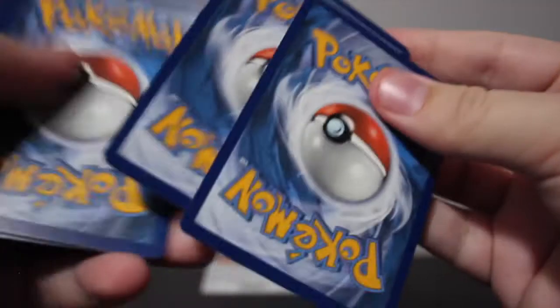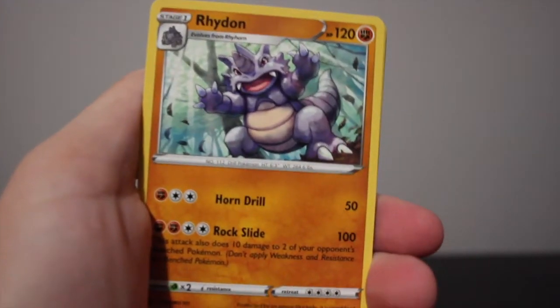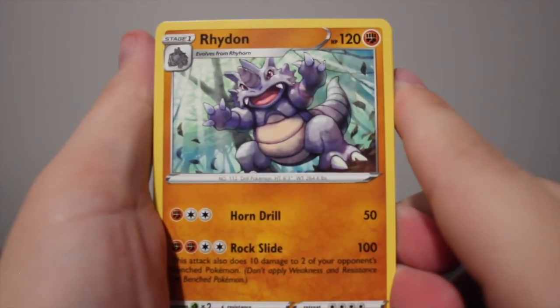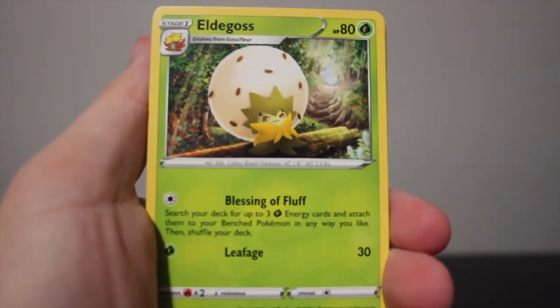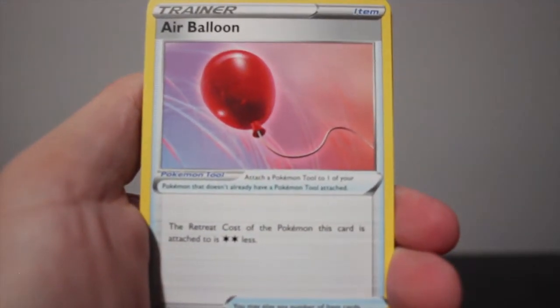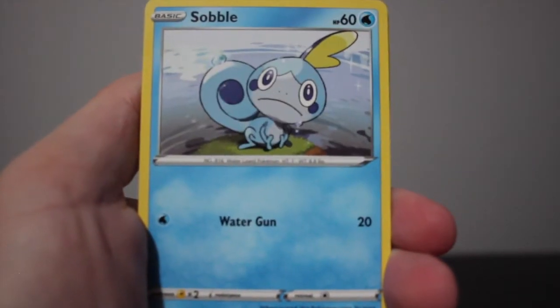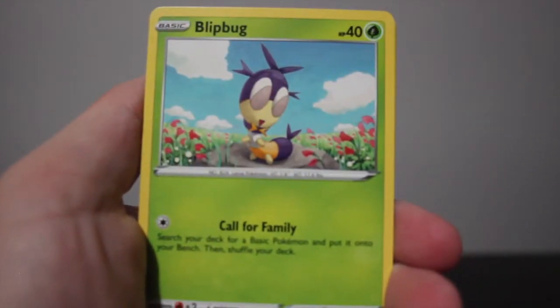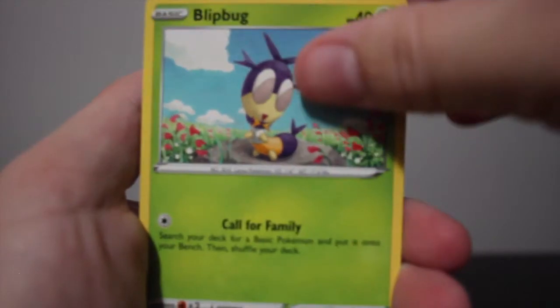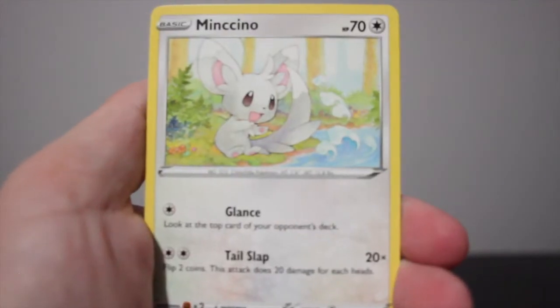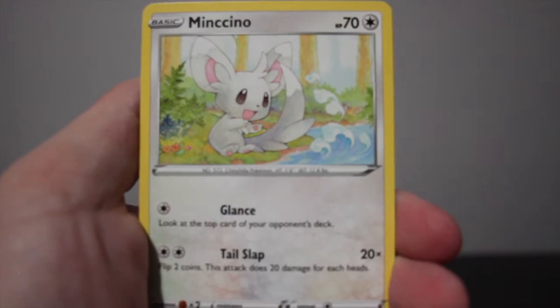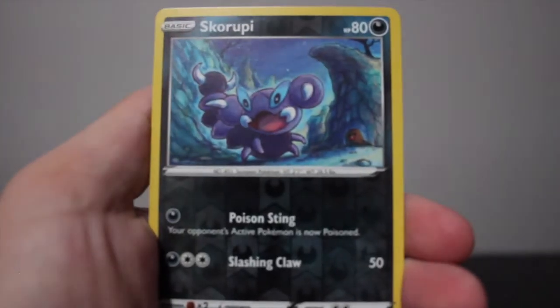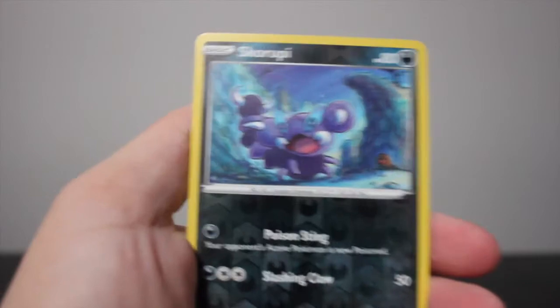Alright, Eldegoss, an Air Balloon, Sobble, Pincurchin, Blipbug, Rhyhorn, Cinccino. This is our reverse, Scorbunny.